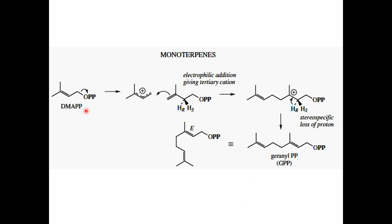This is the mechanism by which monoterpene geraniol is derived from isopentenyl pyrophosphate and dimethylallyl pyrophosphate. The first step is the formation of a resonance-stabilized cation, which reacts with isopentenyl pyrophosphate by electrophilic addition to form a tertiary carbocation. This tertiary carbocation loses a proton and forms geraniol, which is the precursor of all monoterpenes.